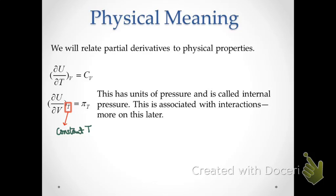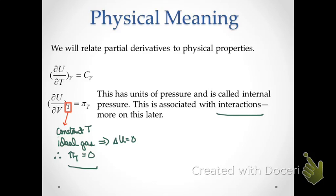If we think about an ideal gas for an isothermal process, we recall that ΔU for any isothermal process is equal to zero. This is something we will always assume to be the case for an ideal gas: ΔU equals zero when temperature is constant. Therefore, the internal pressure for an ideal gas will always be equal to zero, because an ideal gas has no interactions.